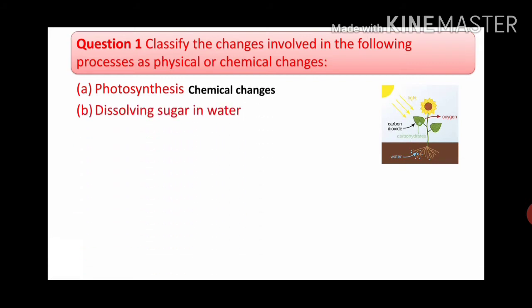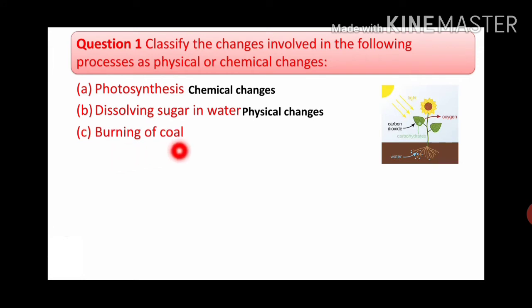Next one is dissolving sugar in water. When we dissolve it, the sugar becomes soluble and disappears. This is just a physical change, because we can obtain the sugar back. Next one is burning of coal. When we burn coal, ashes are generated and we can't get that coal back. That's why we can say it is a chemical change.